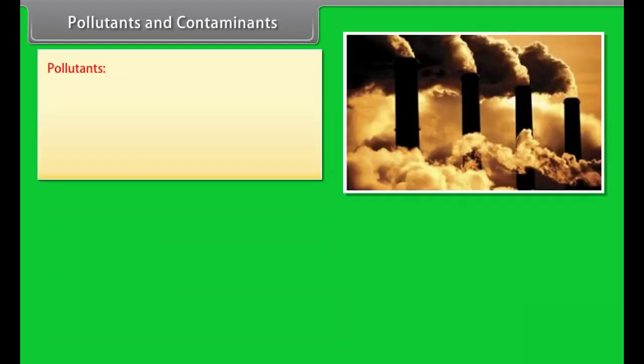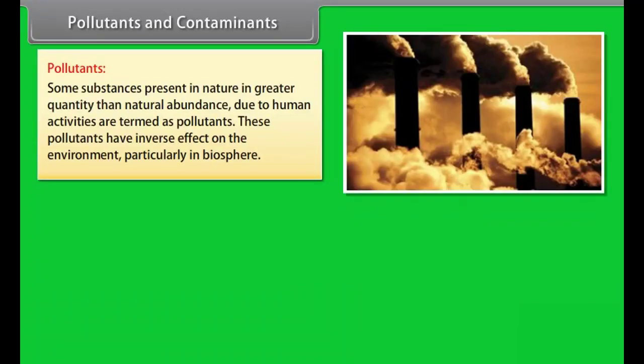Pollutants and contaminants. Pollutants: Some substances present in nature in greater quantity than natural abundance due to human activities are termed as pollutants. These pollutants have adverse effect on environment, particularly in biosphere. For example, lead, mercury, carbon dioxide, etc.